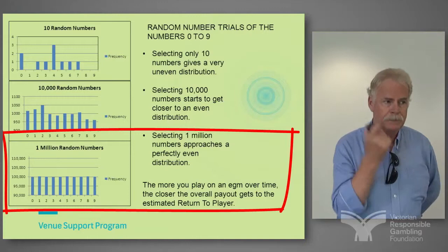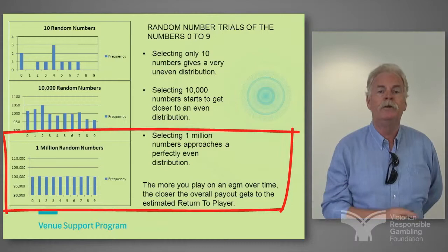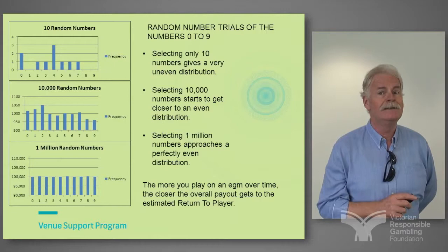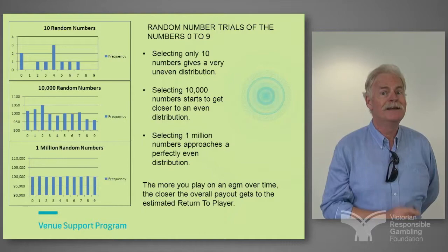The reason we do this in this session is to say that the longer you play the more you approach the expected return to player. To be assured of getting at least 87% back for your dollar you would have to sit at every machine in one venue, 20 hours a day, 365 days a year, and play them all — then you would be assured of losing a minimum of 13%. It's not a good thought.